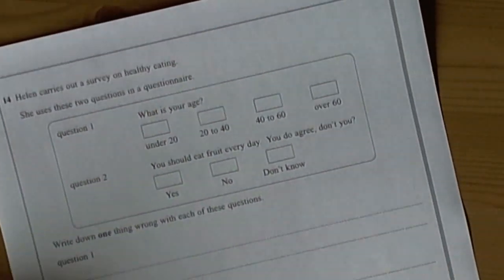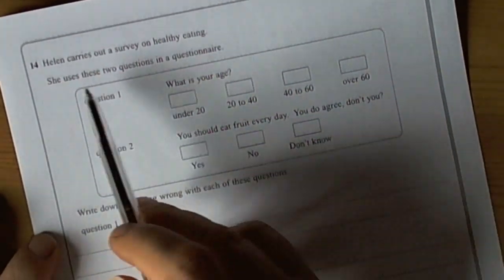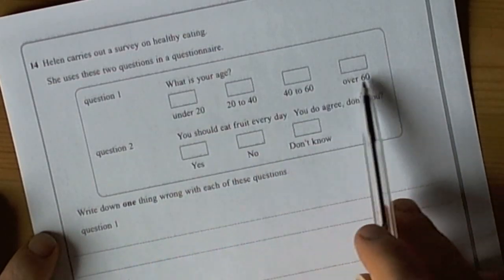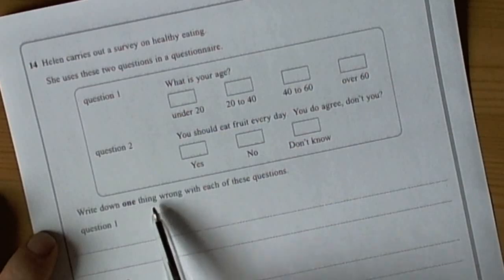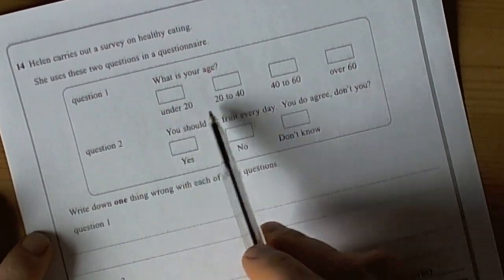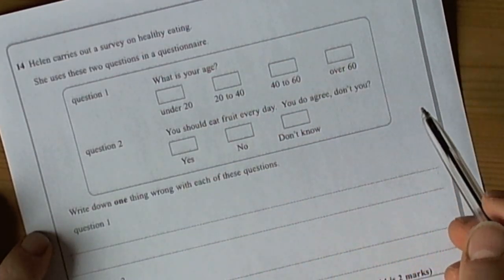You could also be asked to criticize questions. So, here we've got an example. She's carrying out a survey and she has two questions. So, the first one says, what is your age? And the question goes on to say, write down one thing wrong with each of these questions. So, question one, what is your age? We've got under 20, 20 to 40, 40 to 60, over 60.